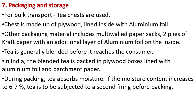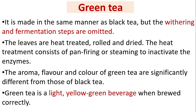Green tea is made in the same manner as black tea, but the withering and fermentation steps are omitted. The leaves are heat-treated, rolled, and dried. The heat treatment consists of pan firing or steaming to inactivate the enzymes. The aroma, flavor, and color of green tea are significantly different from those of black tea. Green tea is a light yellow-green beverage when brewed correctly.